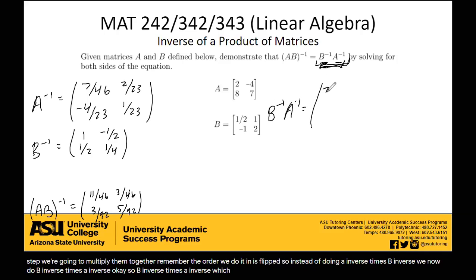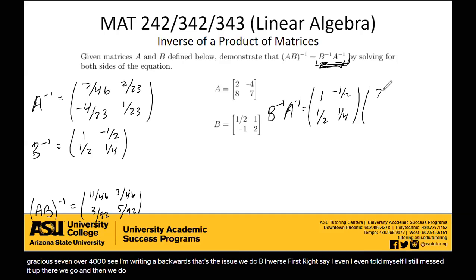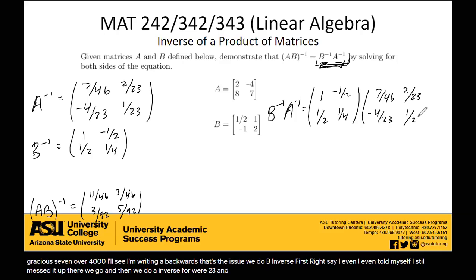So B inverse times A inverse, which equals 7 over 46... oh my gosh, let me write this a little bit neater. Goodness gracious. 7 over 40... oh, see, I'm writing them backwards. That's the issue. We do B inverse first, right? See, I even told myself. I still messed it up. There we go. And then we do A inverse.